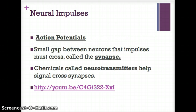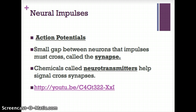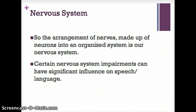Neural impulses work through action potentials. There's a small gap between neurons that impulses must cross, called the synapse. There are chemicals called neurotransmitters that help the signal cross the synapse — these are electrical impulses that communicate information between neurons. I will post a link to a video for you to watch about how neurotransmitters work.